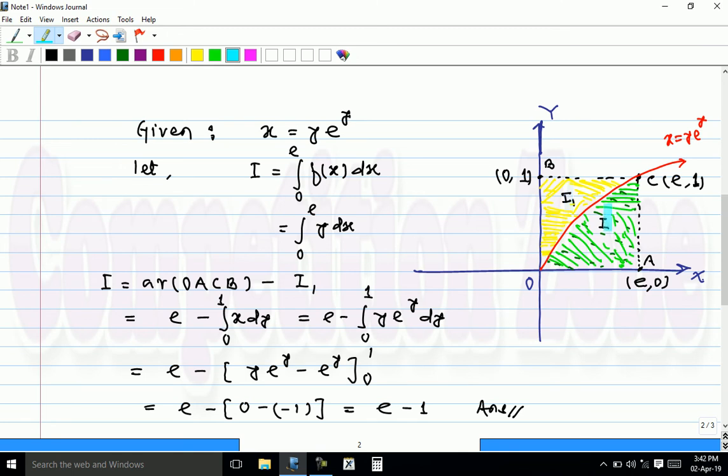Hence the given area i, or the given integral i, is in fact area of rectangle OACB minus i1. Means minus the yellow area i1. So i is area of OACB minus i1.